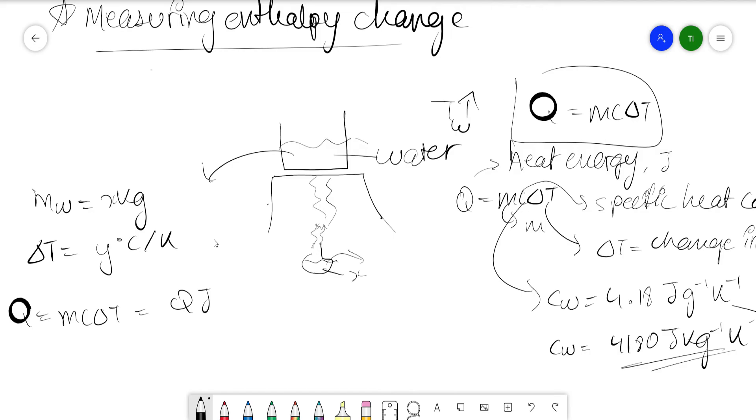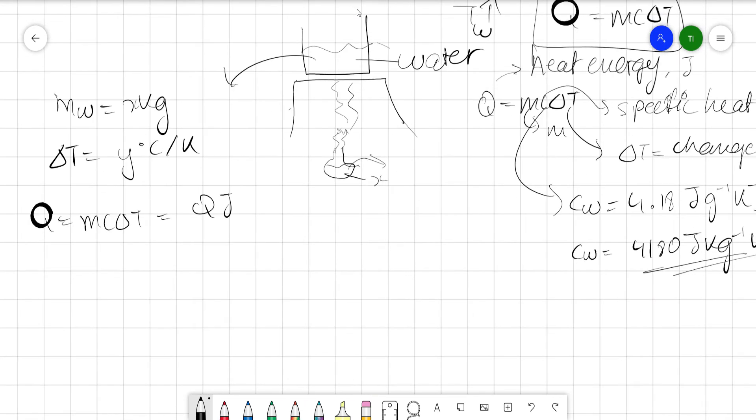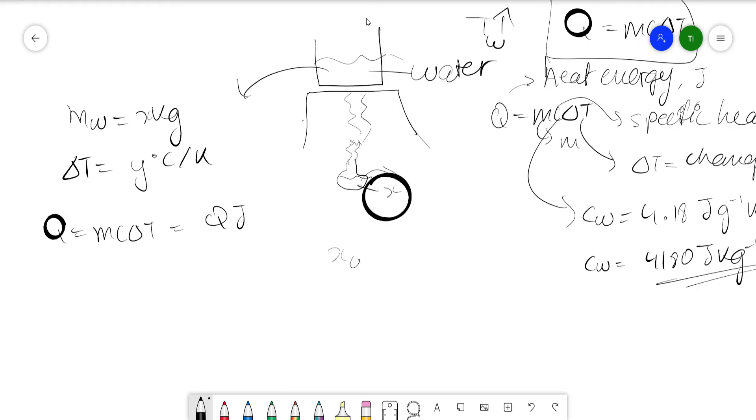Usually you'll be given the mass of compound X, Z grams. You'll have to calculate the moles of this X. What is the unit of enthalpy changes? The unit of enthalpy change is kilojoules per mole. To convert joules to kilojoules, you divide by a thousand.